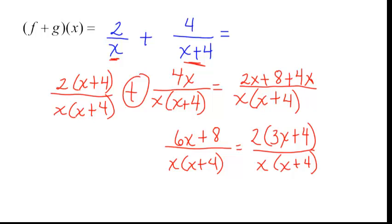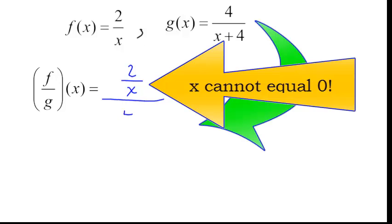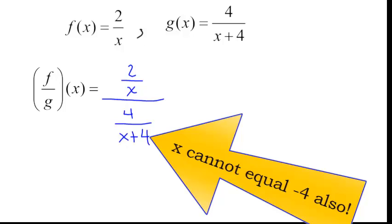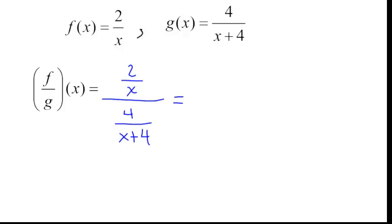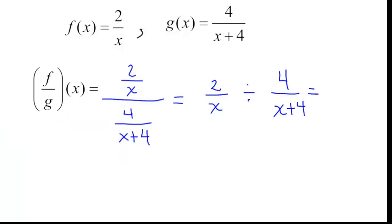Now let's use these same functions, but divide. I want (f/g)(x). f(x) is 2 divided by x. I want to divide this by g(x), which is 4 over (x+4). Some students get confused when they see this. Probably the easiest way to explain it is to write it out. I want (2/x) divided by [4/(x+4)]. Most of you remember that instead of dividing, you multiply by the reciprocal. So that's (2/x) times (x+4)/4.